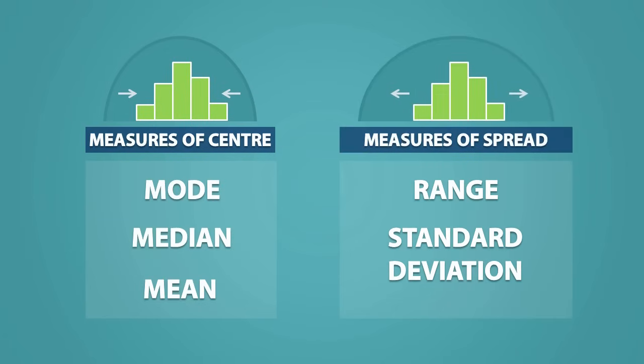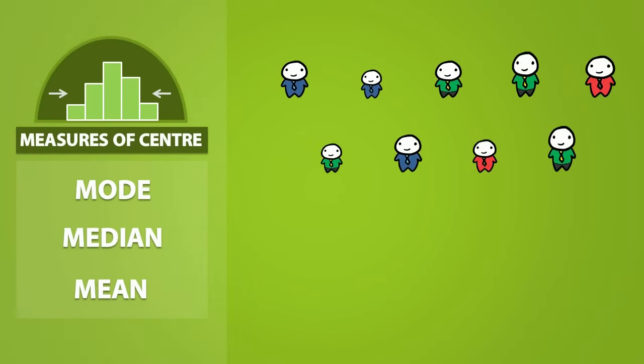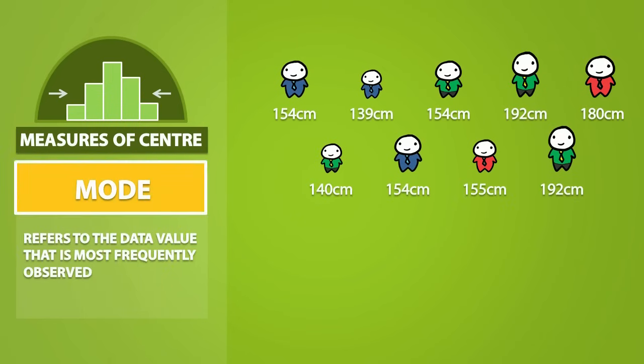We will look at how we can determine the measures of center first. So suppose I took a random sample of 9 people and measured their heights. Now, the mode of a dataset refers to the data value that is most frequently observed.